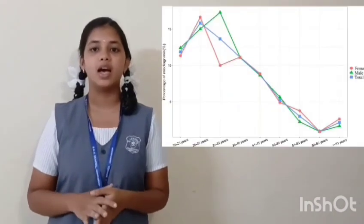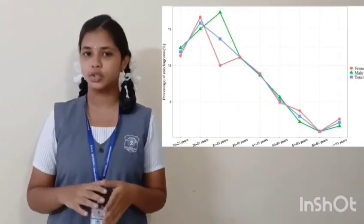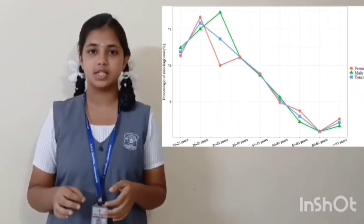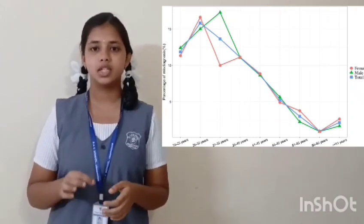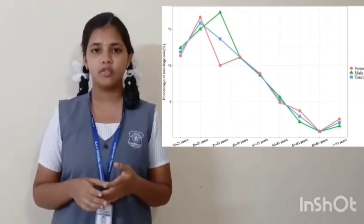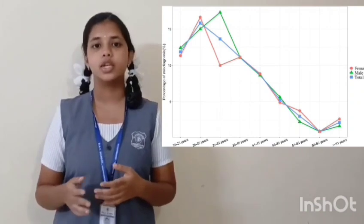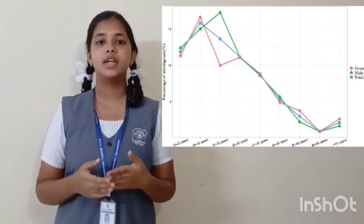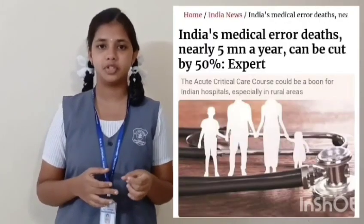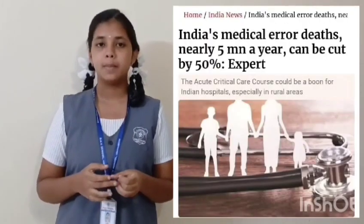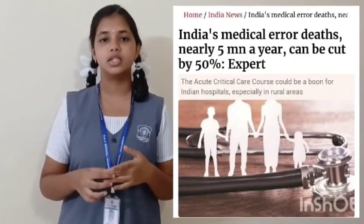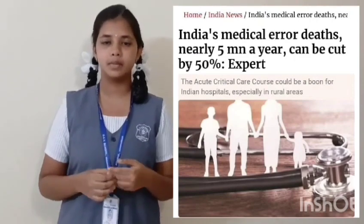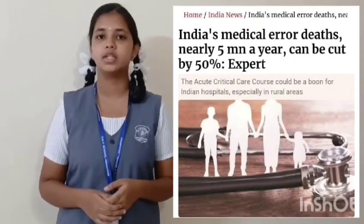Every year about 5 million people in India are misdiagnosed due to medical error. Most of these diseases can be identified through changes in external features which are often unnoticed. For example, spider web-like fingers can indicate conditions in the brain. But these are also unnoticed due to human error.